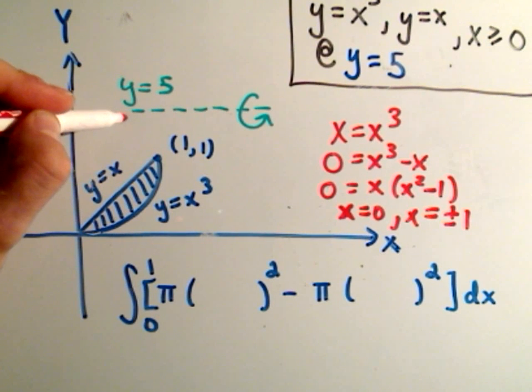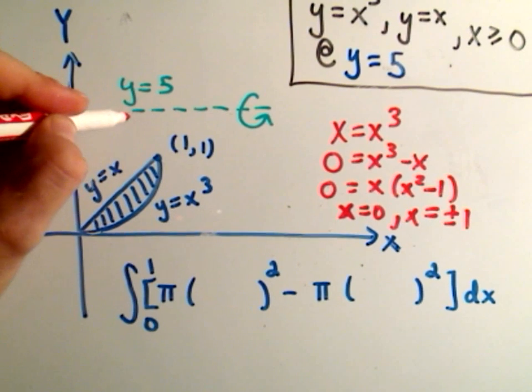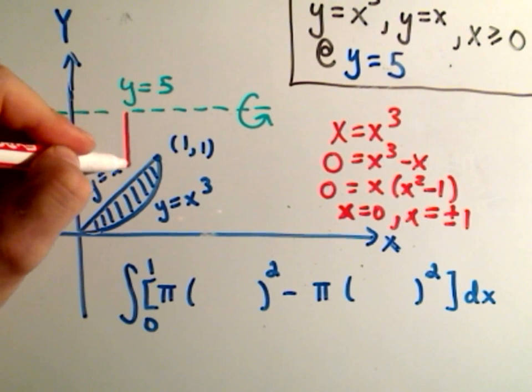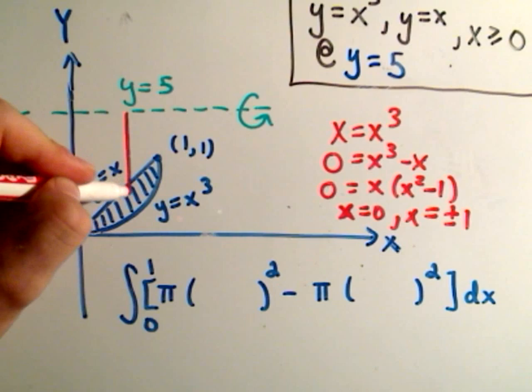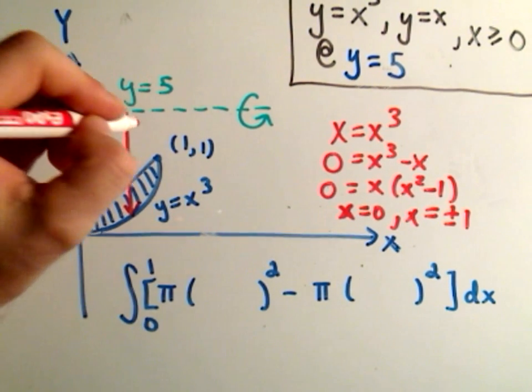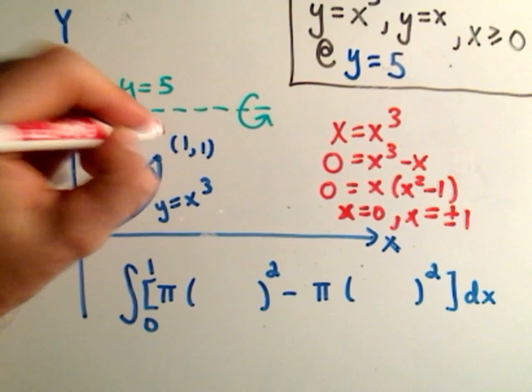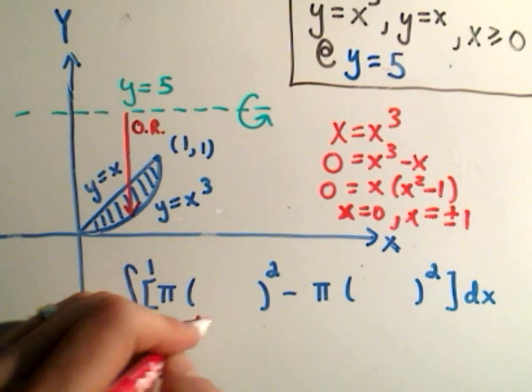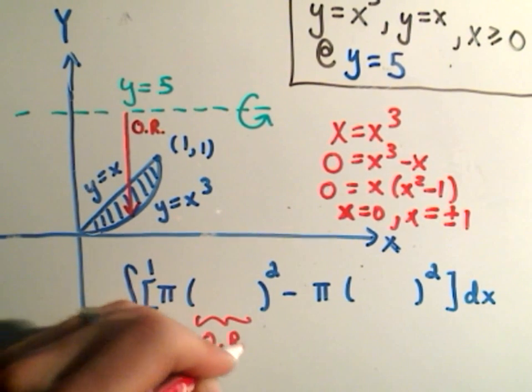So the line y equals 5 is what I'm rotating about. We draw a line, again, perpendicular to that. So I'm going to draw a line perpendicular to that. It just hits my region. And now it's just about to exit the region. So again, this is going to be the outer radius. And that's what I plug in to the first part.